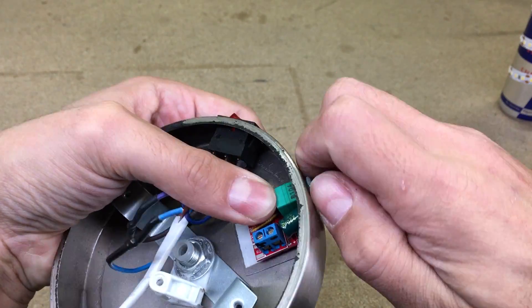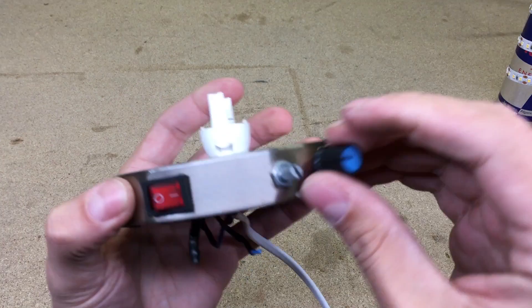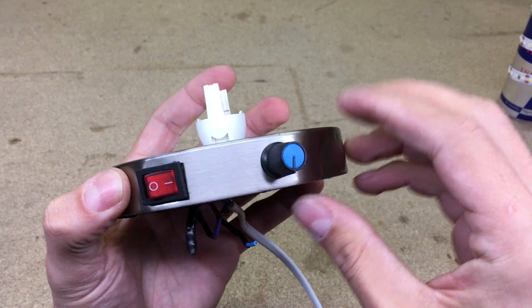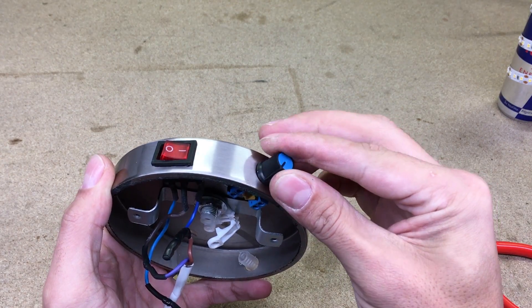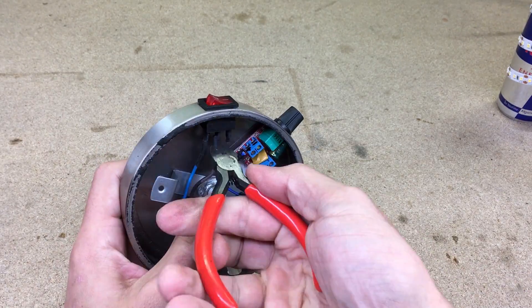This module have on-off function, so I don't need to use button anymore. If I'll remove it, there will be a hole, so I left it and just cut off no needed wires.